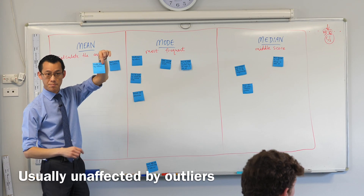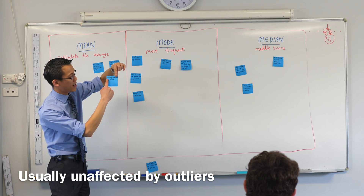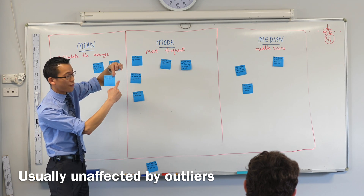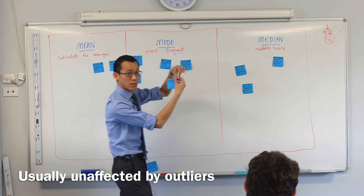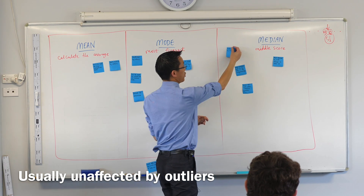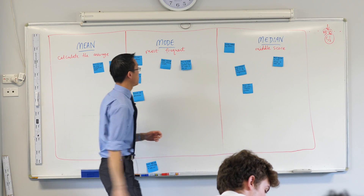That means, by course of deduction, 'usually unaffected by outliers' goes over to... Median. Median — very good. You can write that down now if you like, even though we're not up to it yet.